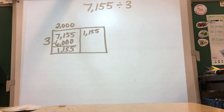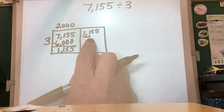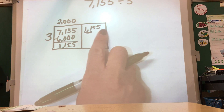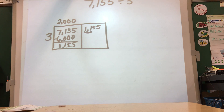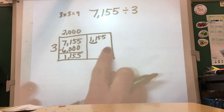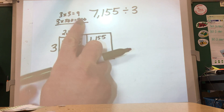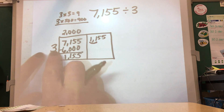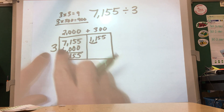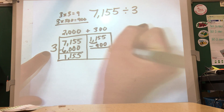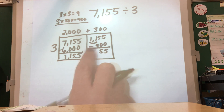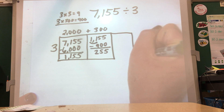Now I'm thinking three times what is close to 1,155. Using the smile method, underlining the first two digits, I think what multiple of three is close to 11 — really 1,100. Counting up: 3, 6, 9, 12 — 12 is too high, so go back to 9. Three times 3 is 9, so three times 300 equals 900, which is pretty close to 1,155. We take away 900, and doing the regrouping — 11 minus 9 is 2 — so I'm now down to 255. I need to extend my area model.